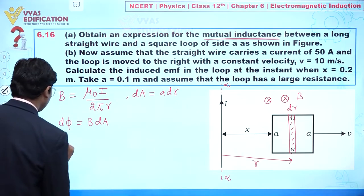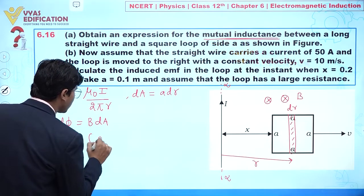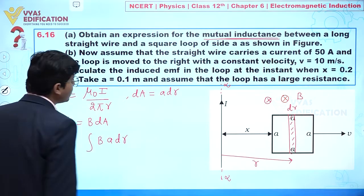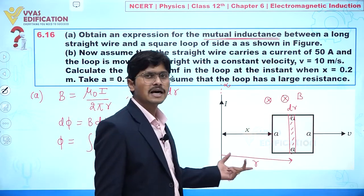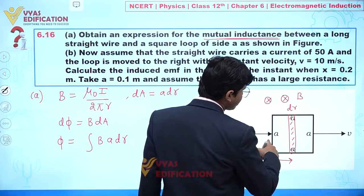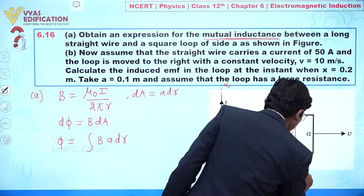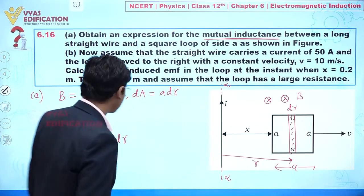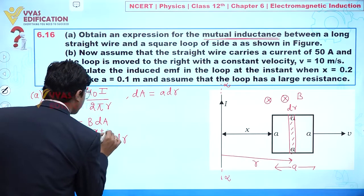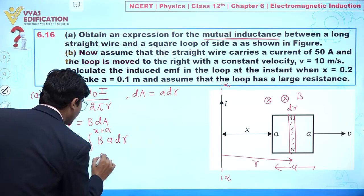The total flux is given by the integration of B·a·dr. Since the variable is r, the limits go from x to x + a, where x is the distance from the wire to the near side of the loop and a is the side length.